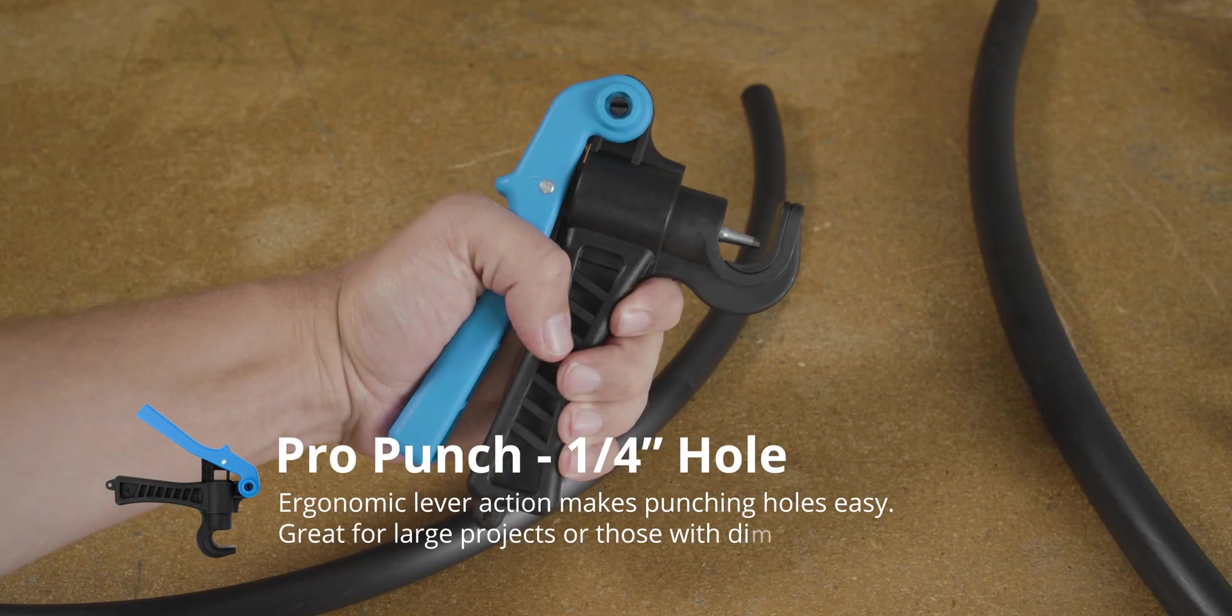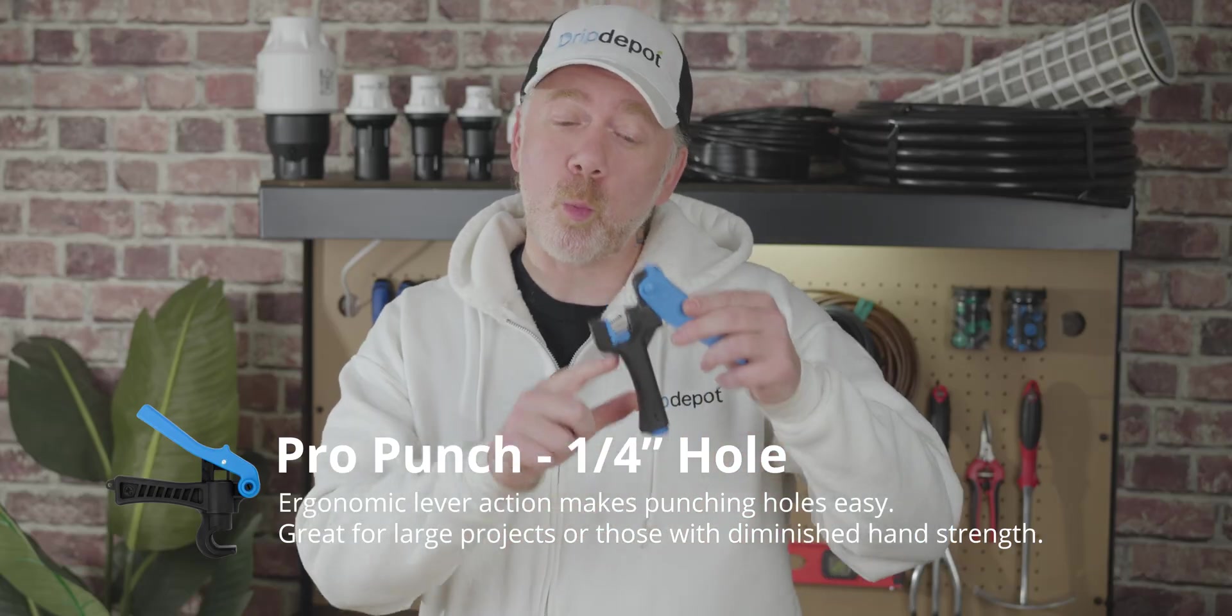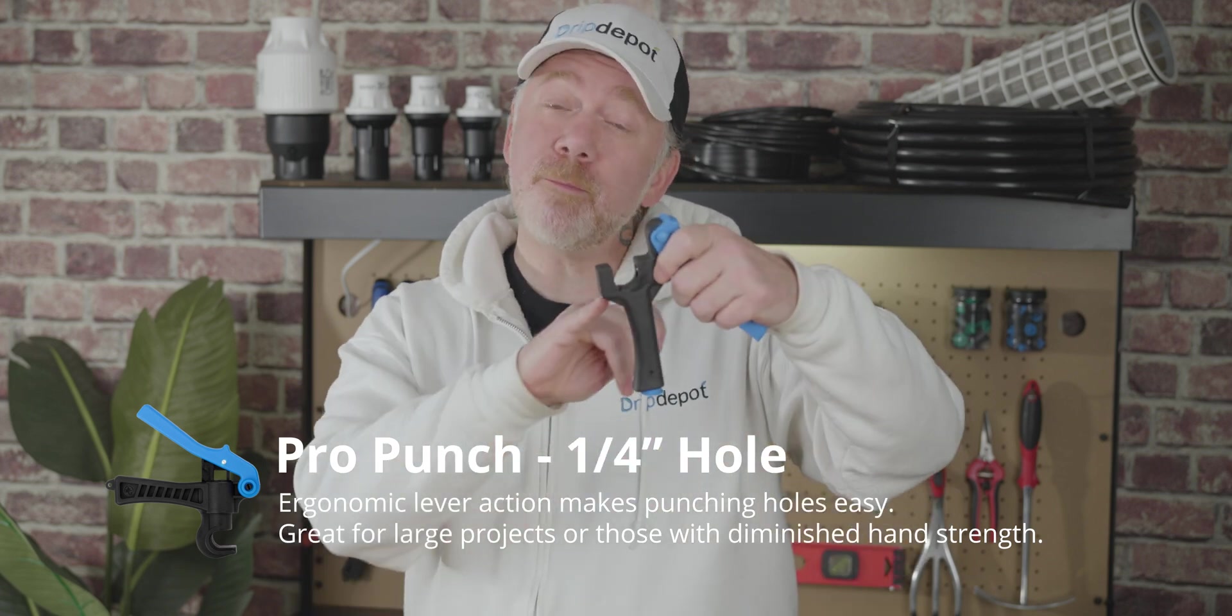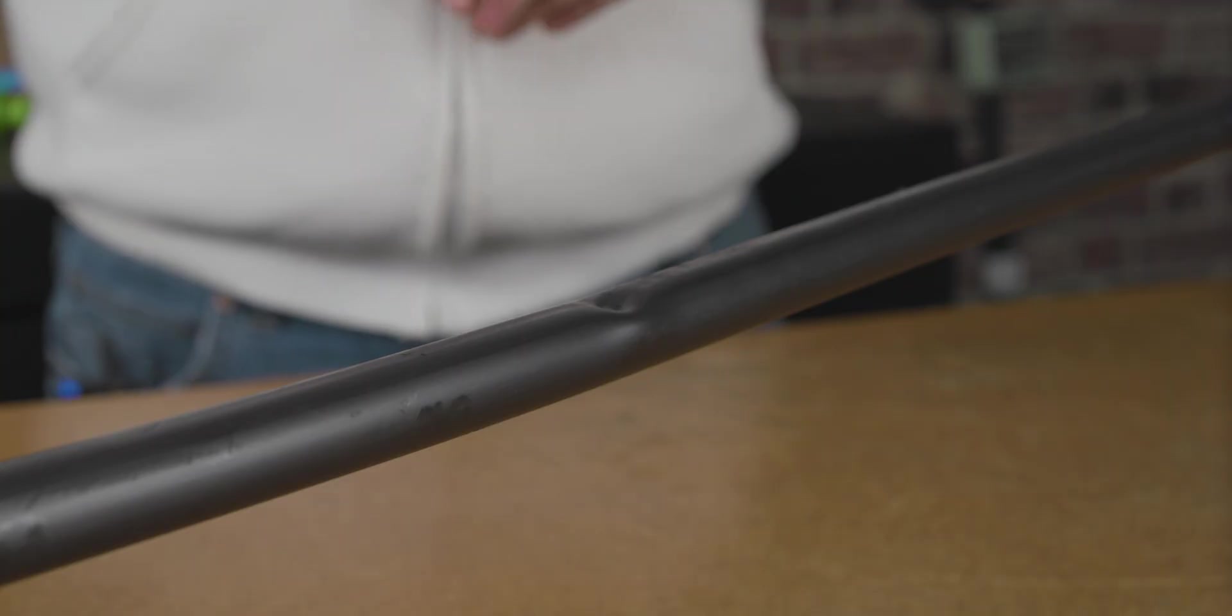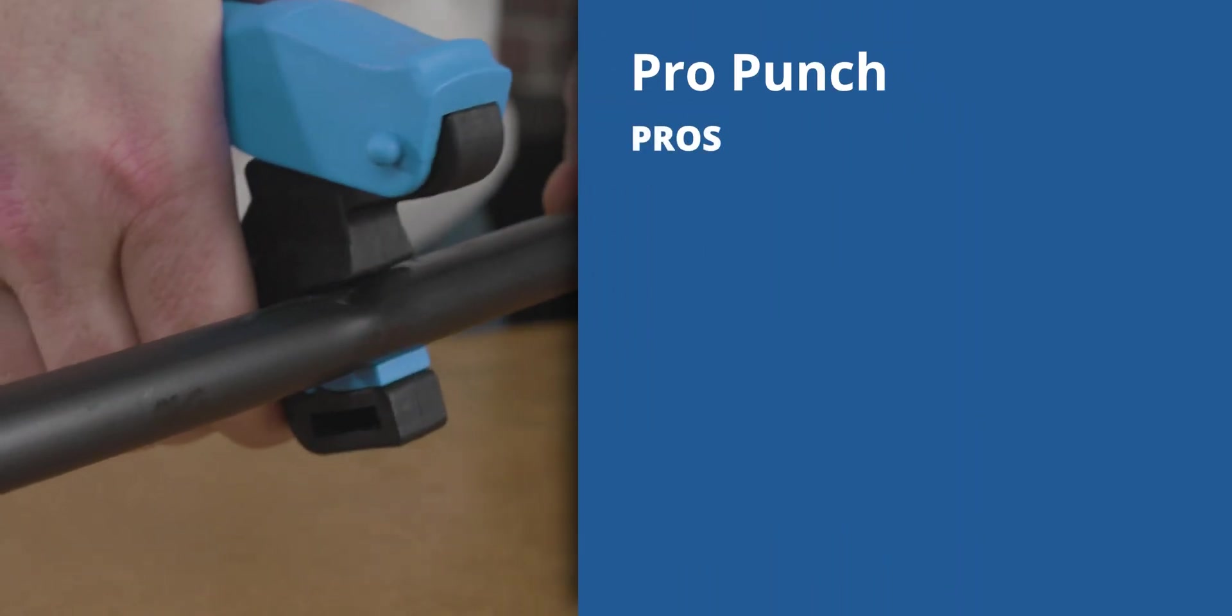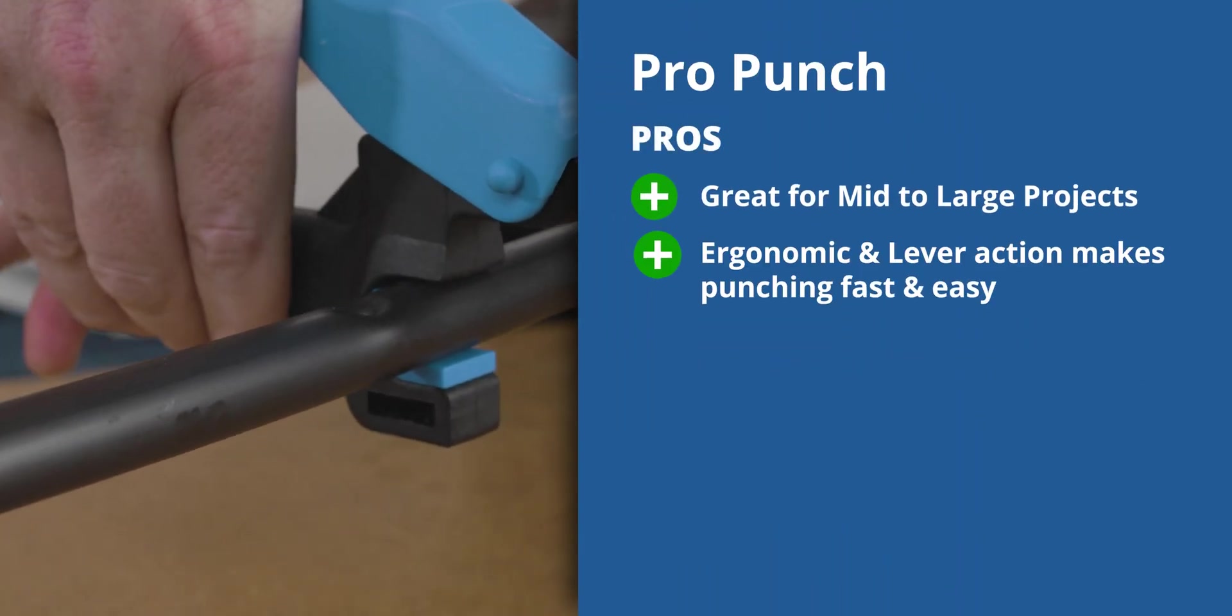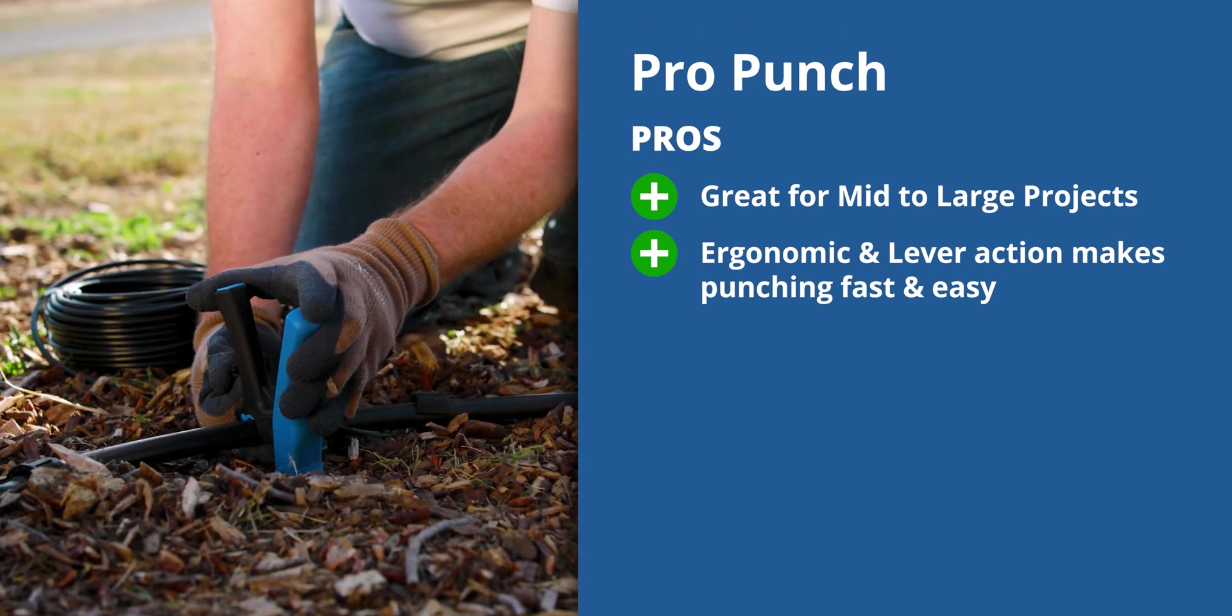Pro Punch is one we see used a lot in larger projects. It can punch one-half inch tubing, like this. If you pop out the adapter, it can punch up to three-quarter inch poly tubing. It's very ergonomic, and it makes punching fast and easy. It's so easy to use that you might even punch more holes than you'd initially planned for. It's that easy.